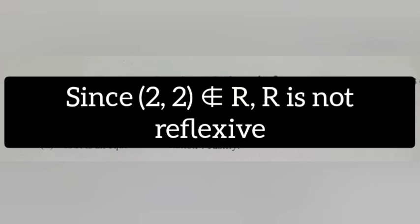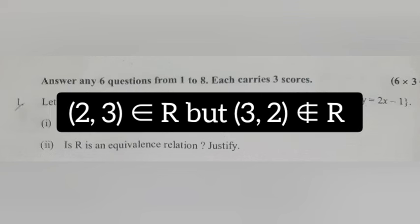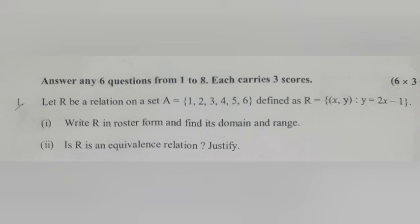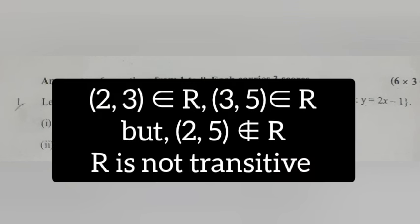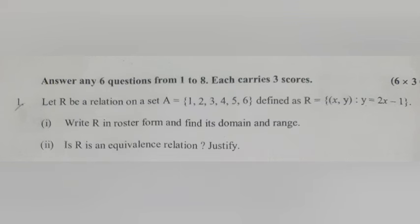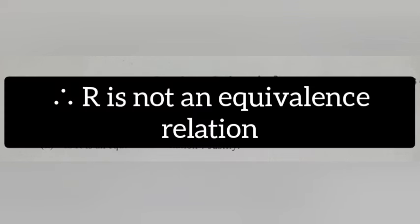Answer 2: Since (2,2) does not belong to r, r is not reflexive. Since (2,3) belongs to r but (3,2) does not belong to r, r is not symmetric. Since (2,3) belongs to r and (3,5) belongs to r, but (2,5) does not belong to r, r is not transitive. Therefore, r is not an equivalence relation.